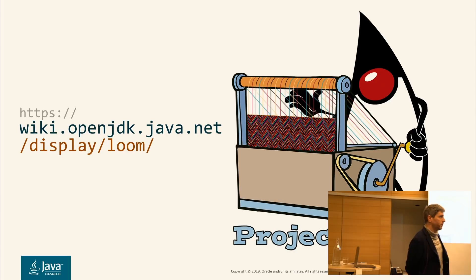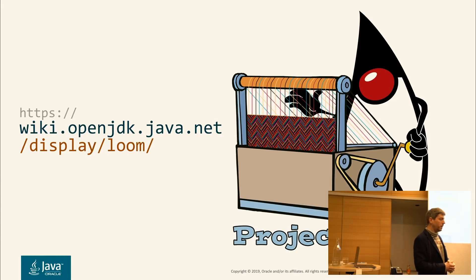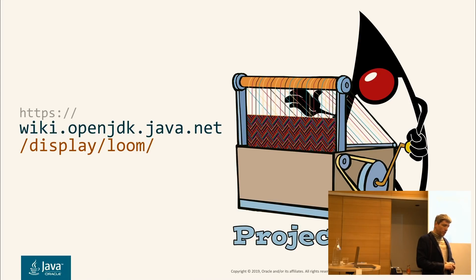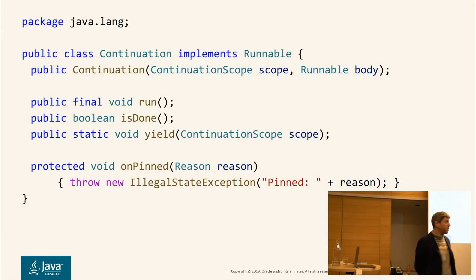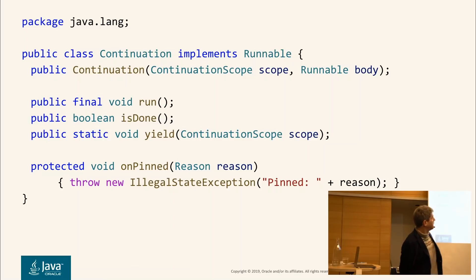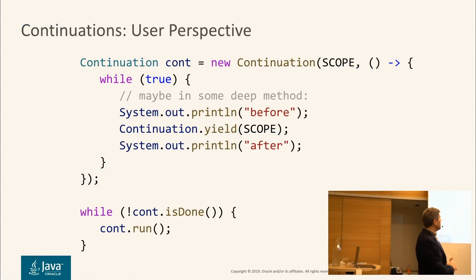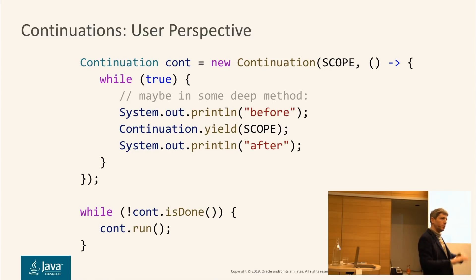Fibers are implemented on top of a more basic primitive in the VM called Continuations. The VM gives you continuations, and the fibers are implemented on top of them in the libraries. Let me show you what it looks like. A continuation is basically like a Runnable — it doesn't have any notion of running things in parallel. It's a special kind of Runnable that runs in line with your code: you call it and it runs in line, nothing in parallel.